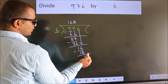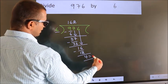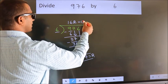No more numbers to bring it down. So we stop here. This is our remainder. This is our quotient.